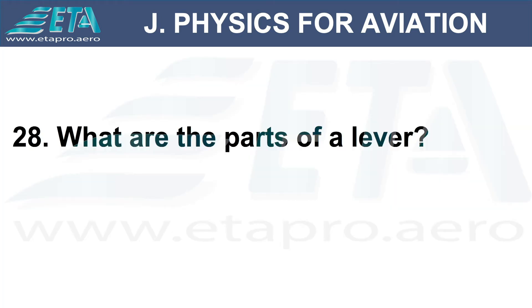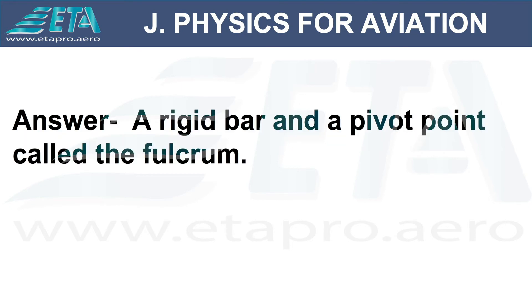What are the parts of a lever? Answer: a rigid bar and a pivot point called the fulcrum.